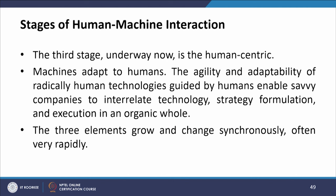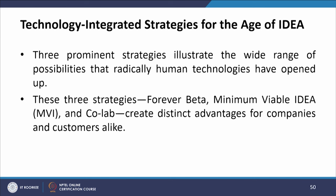The third stage, underway now, is human-centric, where machines adapt to humans. The agility and adaptability of radically human technologies enables companies to interrelate technology, strategy formulation, and execution as an organic whole, growing and changing synchronously. Three prominent strategies illustrate the possibilities: forever beta, minimum viable idea (MVI), and co-lab.